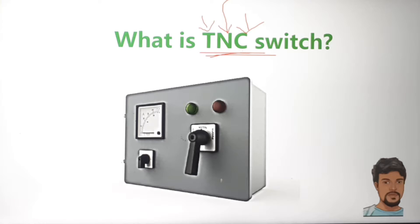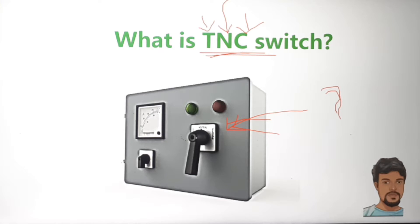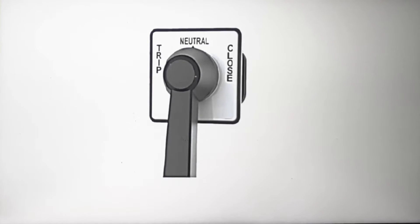You can see a TNC switch in the electrical panel. Generally, we use this TNC switch in order to control the circuit breaker — it may be any type of circuit breaker.